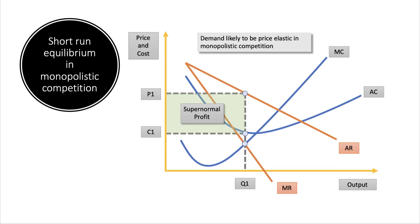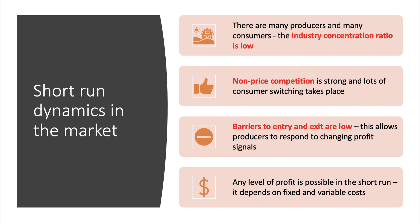The short-run equilibrium diagram for monopolistic competition is essentially the same as monopoly, so that's easy to revise. In the exam, draw the demand curve and associated MR curve as fairly price elastic. This diagram shows that the firm, if it's a profit maximizer, can make some supernormal profit as shown in the shaded area. The level of profit the firm makes can be anything — it depends fundamentally on cost. In summary: many producers, many consumers, low industry concentration ratio, lots of non-price competition, and it's fairly easy for customers to switch from one product to another.